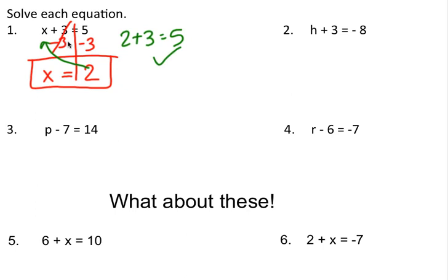On number 2, you have h plus 3, so the opposite of adding a 3 would be subtracting a 3. I'm going to draw my wall — what I do to one side, I do to the other side. 3 minus 3 goes to 0 so it cancels out; I'm left with h equals, and then negative 8 minus 3. Since the signs are the same I'm going to add them to get 11, and keep the sign of that number — negative 11.